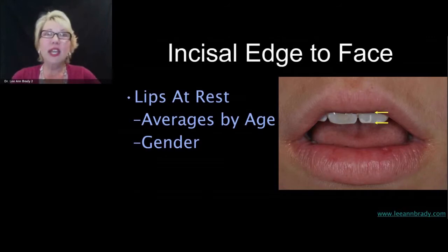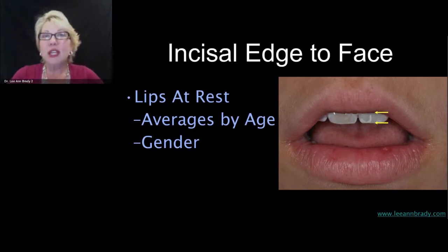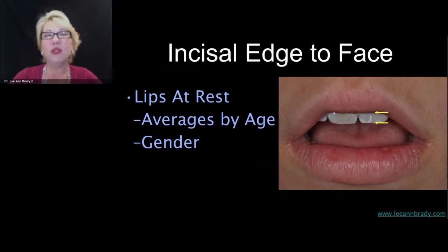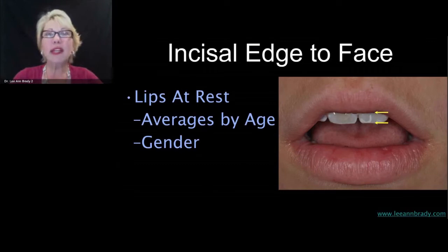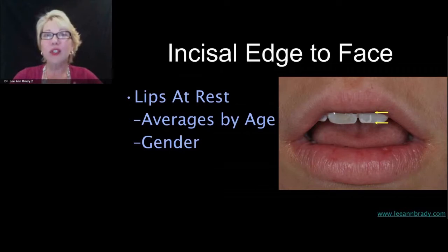We're looking at incisal edge display of maxillary central incisors. There are aesthetic norms, and we use those norms to decide where we want those central incisors for each patient. For women in their 20s, we typically want to see 3 to 3.5 — some people say as much as 4 — millimeters of their maxillary central incisors at lips-at-rest position. This is how we look when we're talking in casual conversation.